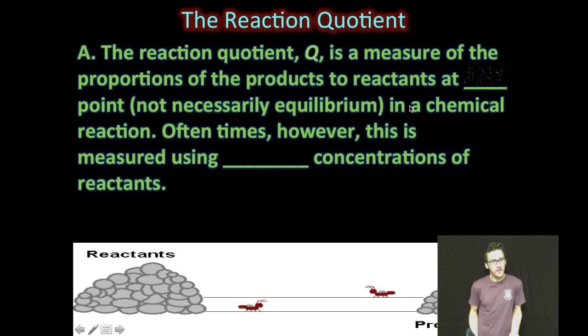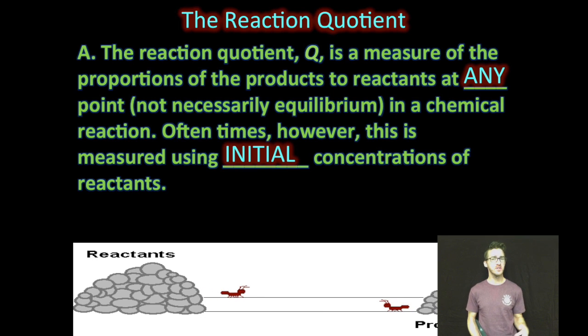Alright, so first what the heck is a reaction quotient? The reaction quotient is just a measure of the proportions of the products to reactants at any point, not necessarily equilibrium, in a chemical reaction.